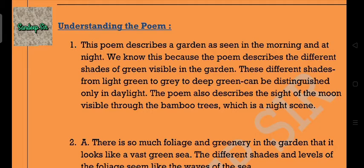Let's start with the exercise 'Understanding the Poem.' Answer 1: This poem describes a garden as seen in the morning and at night. We know this because the poem describes the different shades of green visible in the garden. These different shades, from light green to gray to deep green, can be distinguished only in daylight. The poem also describes the sight of the moon visible through the bamboo trees, which is a night scene.